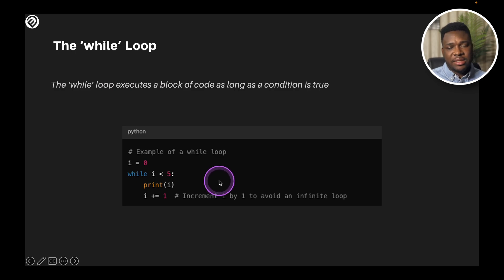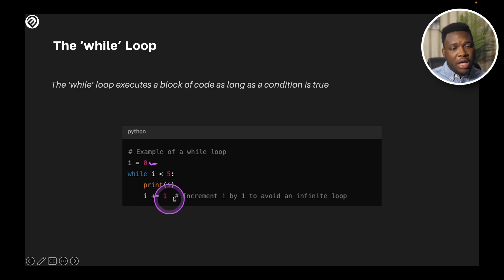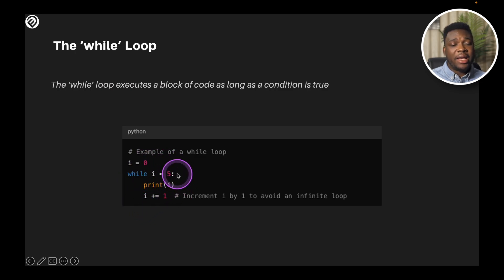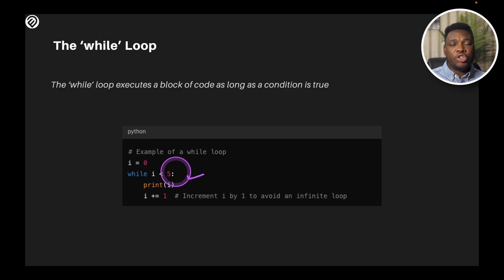So what we're doing is: while i is less than 5, i starts at zero, and we increment the value of i — i is equal to i plus 1. It goes over again, i becomes 1, then i becomes 2, then 3, and so on until i reaches 5. The moment i becomes 5, it exits the loop because the condition has been met. As long as the condition remains valid, the loop keeps running, but once the condition is met, it exits. That's the difference between the while loop and the for loop.